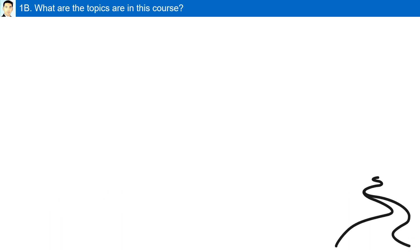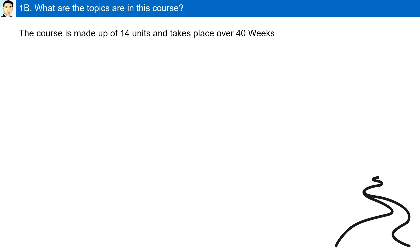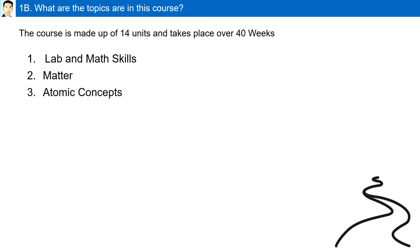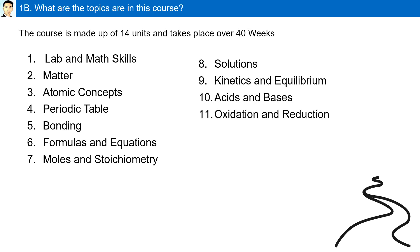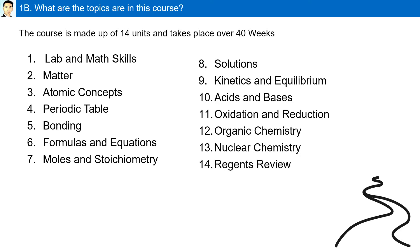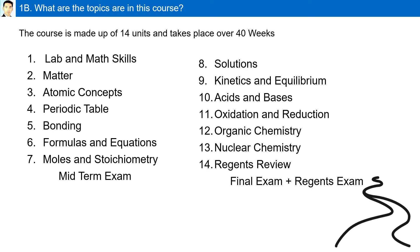What are the topics in this course? The course is made up of 14 units and takes place over 40 weeks, covering math and lab skills, matter, atomic concepts, periodic table, bonding, formulas and equations, moles and stoichiometry, solutions, kinetics and equilibrium, acids and bases, oxidation and reduction, organic chemistry, nuclear chemistry, and Regents Review. In addition, there is a midterm exam and a final exam, including the Regents exam.